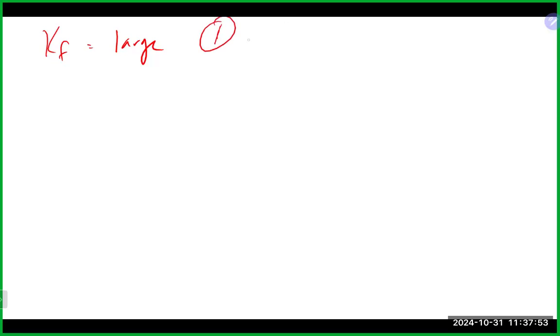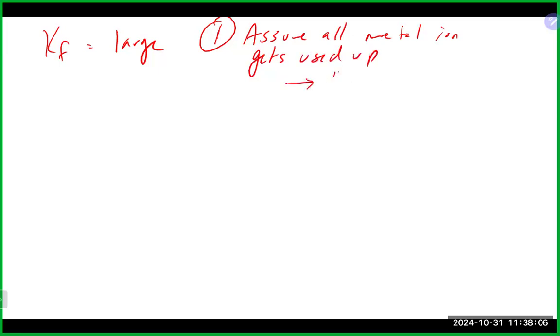We've been talking about Kf and complex ions. When we do these problems, those Kf values are pretty large, so we make two assumptions. The first assumption is that we assume all the metal ion gets used up. That basically means we already know what our x is going to be, so we can use a number. You want to make sure you're using molarity so you end up with the right units and the right answer.